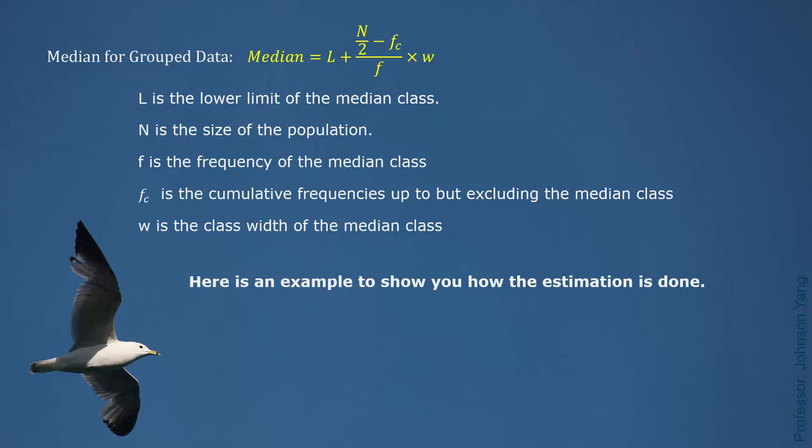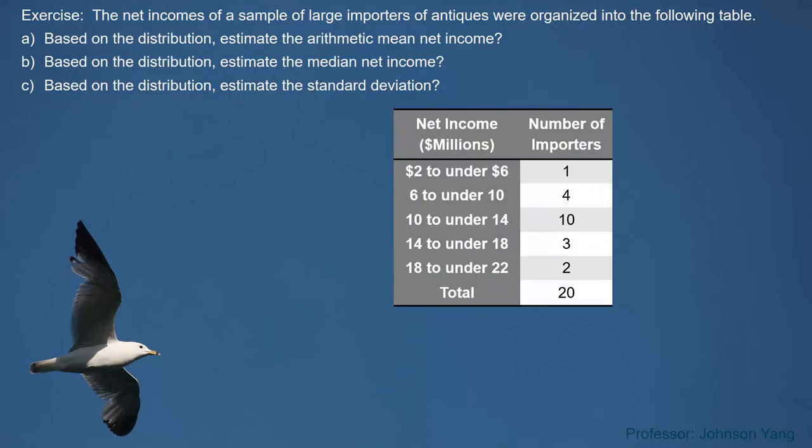In this question, we are only given the frequency distribution about net income. We are going to find the mean, median, and standard deviation based only on this frequency distribution table.